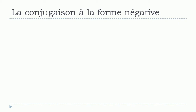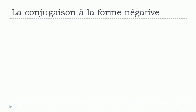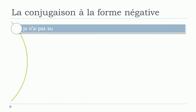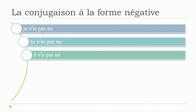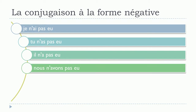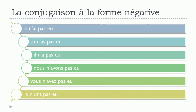And then now the next one will be indicatif passé composé. Je n'ai pas eu. Tu n'as pas eu. Il n'a pas eu. Nous n'avons pas eu. Vous n'avez pas eu. Ils n'ont pas eu.